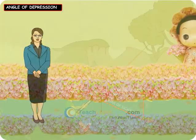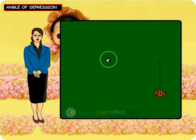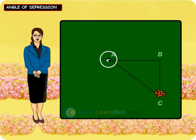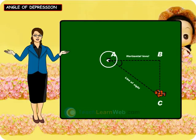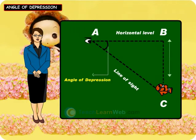the angle between the horizontal level drawn through the observer's eye and the line joining the eye to any object is called the angle of depression of the object, if the object is at a lower level than the eye.